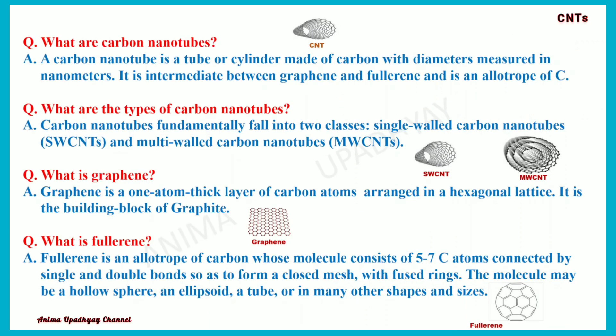What are Carbon Nanotubes? A Carbon Nanotube is a tube or a cylinder made of carbon with diameters measured in nanometers. It is intermediate between graphene and fullerene and is an allotrope of carbon.